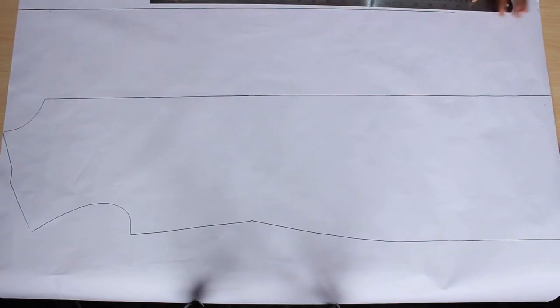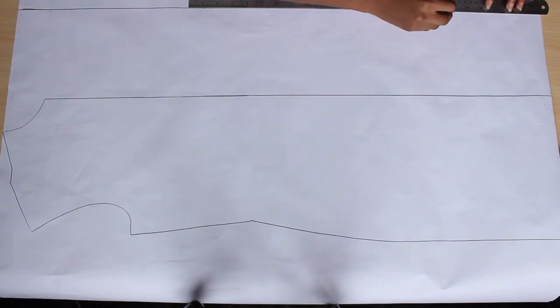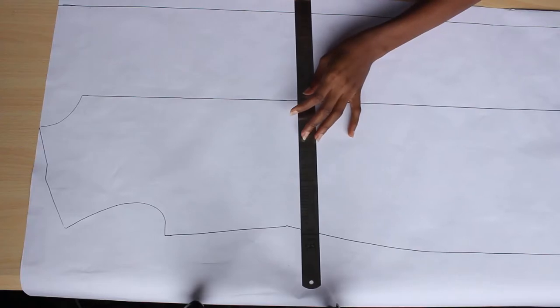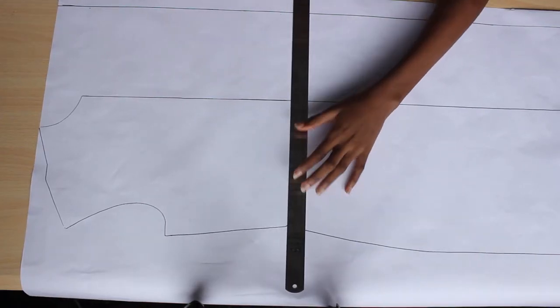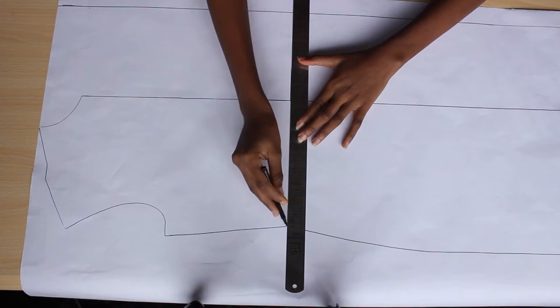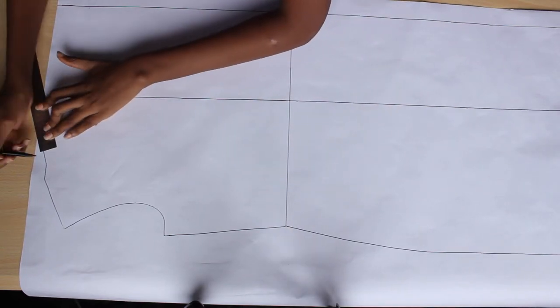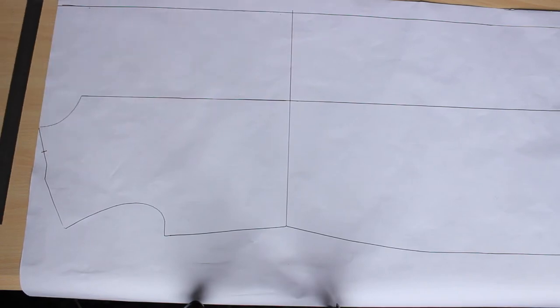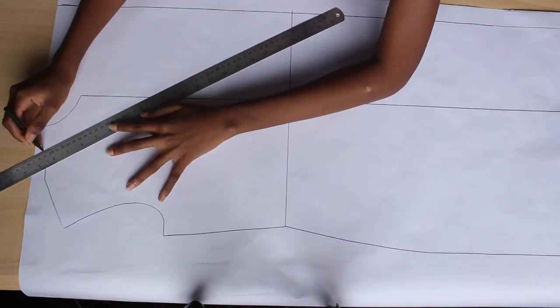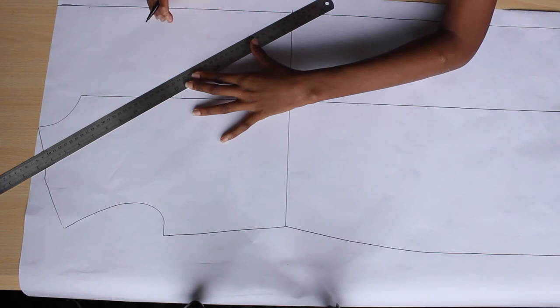From here I'm going to find the point where my waist is so that I can use that as a reference for drawing the V of my neck. From my neck I'm going to measure four centimeters. That's what I did there. From this four centimeter line I'm going to use my ruler to draw a V.